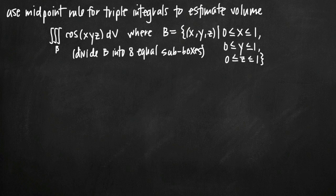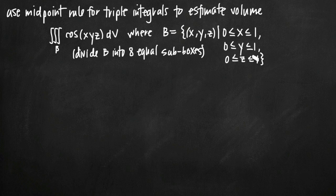Today we're going to be talking about how to use the midpoint rule for triple integrals to estimate the volume of a solid. In this particular problem, we've been asked to estimate the volume of the function cosine of x, y, z, where this function is sitting on top of a cube defined by region B. B is defined by intervals for x, y, and z — each lying between 0 and 1.